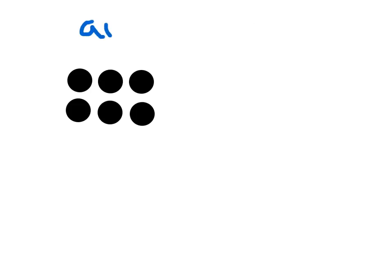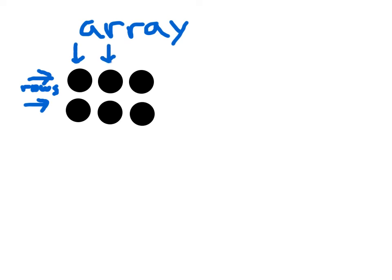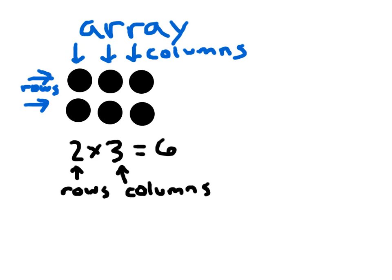One last thing to show you here — this is what we call an array. An array has rows and it has columns. Going across, these are the rows, so this array has 2 rows. Going up and down, we have 1, 2, and 3 columns. We can write multiplication and division sentences about this array. So we could write: 2 rows times 3 columns equals a total of 6.